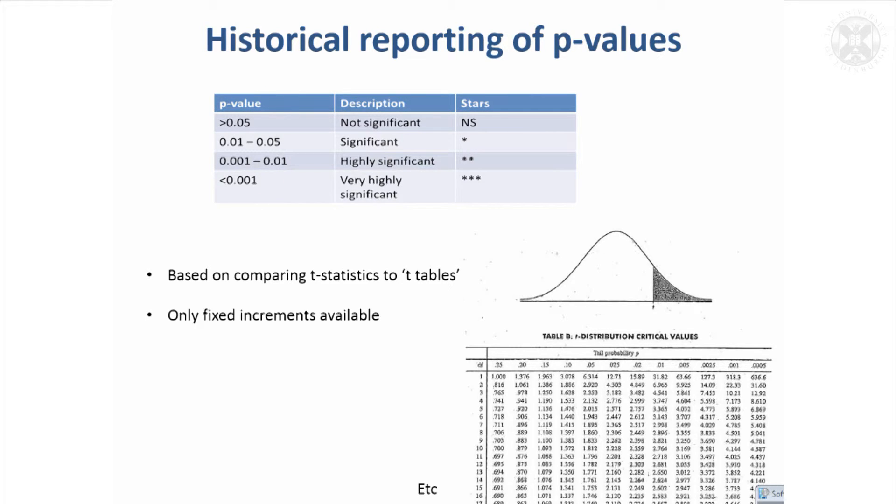The convention became to give stars depending on how significant a result is. If it was just significant, you'd get one star, and then highly significant, less than 0.01 but not less than 0.001, you'd give it two stars. For p-values which were very small, less than 0.001, you'd get three stars.